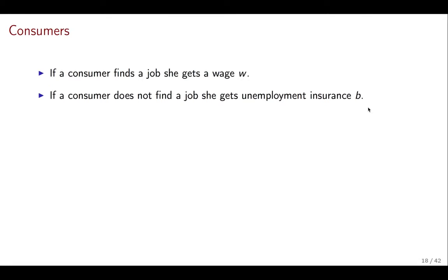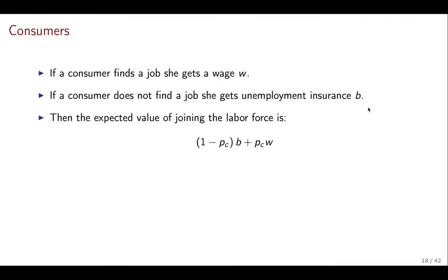The first thing is to make clear what the options are for the consumer. If the consumer decides to participate and finds a job, she will get a wage W. W is taken as given, but we'll see later how its value is determined. At the time you search, you already know what type of wage you're going to get. On the other hand, the consumer might search and fail — if the consumer does not find a job, they get unemployment insurance or unemployment income B. So these are the two options the consumer has.